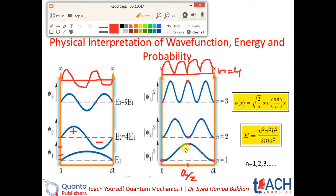Now the biggest question is: we said at the start that the particle is inside the infinite potential well and it cannot escape. So if the particle is inside the well, then for even number states the probability of finding the particle at the center of the well is zero. So the probability of finding the particle there is equal to zero.